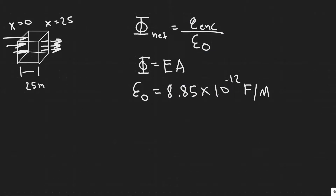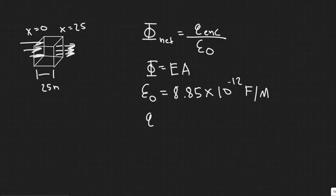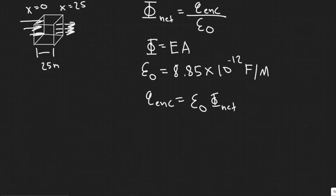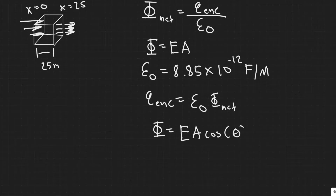Keep in mind, if we're trying to find the charge enclosed, we rearrange the formula: charge enclosed equals epsilon naught multiplied by the net electric flux. To find the net electric flux, we use the formula: electric flux equals the electric field multiplied by the surface area multiplied by cosine of theta.